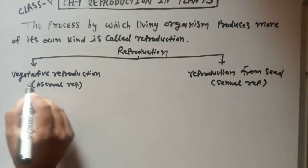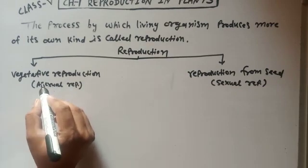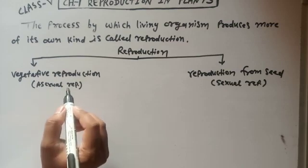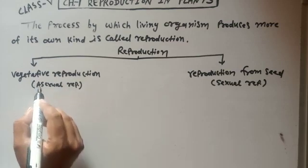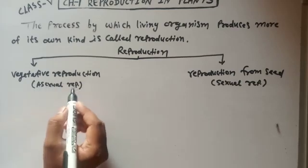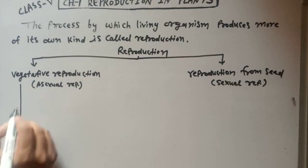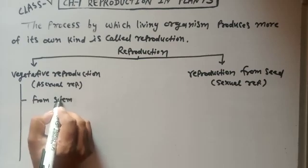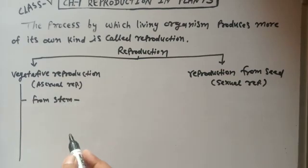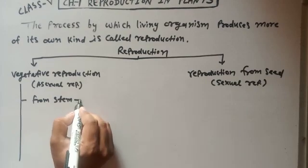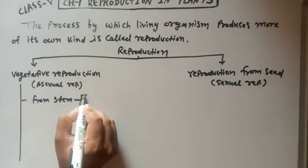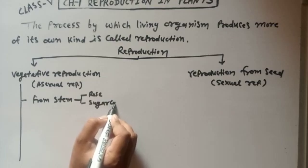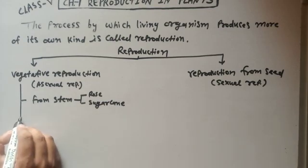What is the meaning of vegetative? The part of a parent plant. There are many types of vegetative reproduction. First, from stem - some plants grow from stem. Some examples are rose, sugarcane. And some plants grow from underground stem. Its examples are potato and ginger.